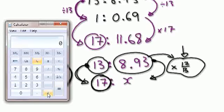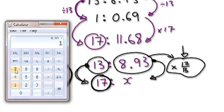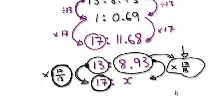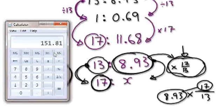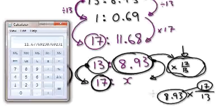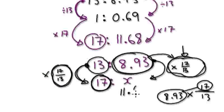So if you want to know x, start at £8.93 and then times by 17 over 13. I'm going to multiply by 17 and then divide by 13 — it's the same thing. So 8.93 times 17 divided by 13 equals £11.68. You see, this gives the same answer as before.